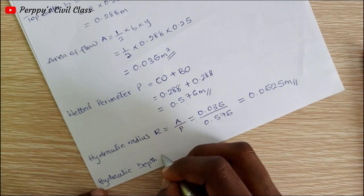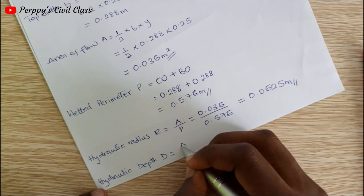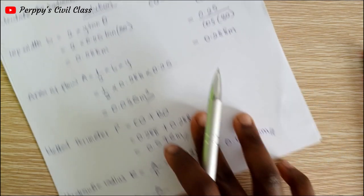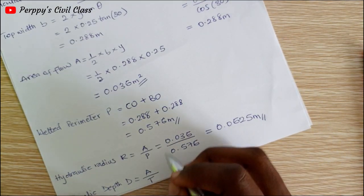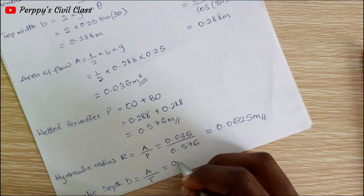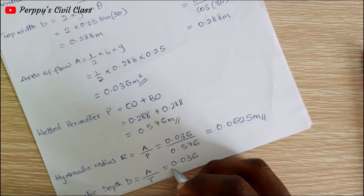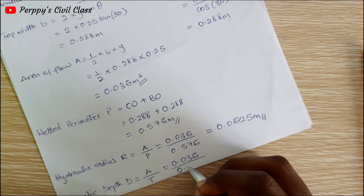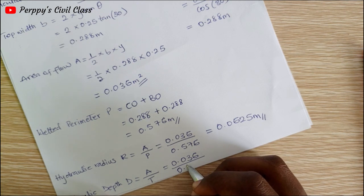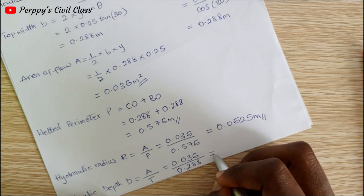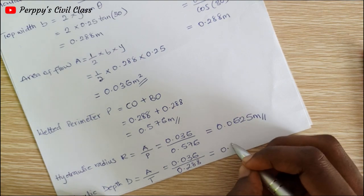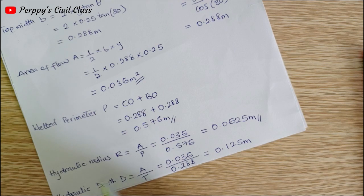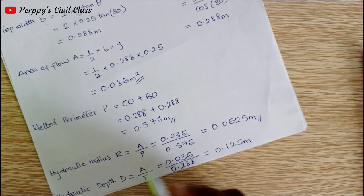Hydraulic depth D is equal to area of flow divided by the top width, which we calculated as 0.288. Area of flow 0.036 divided by our top width 0.288 is equal to 0.125 meters. So this is our hydraulic radius and this is our hydraulic depth.